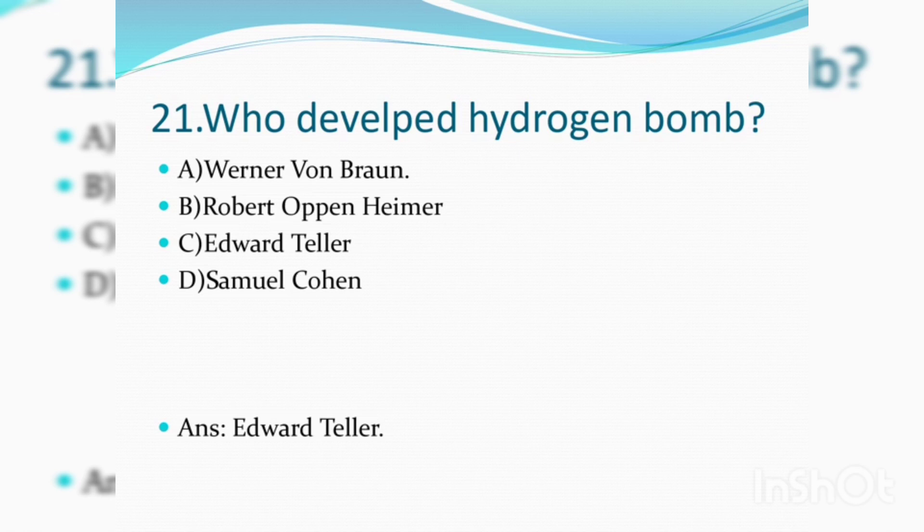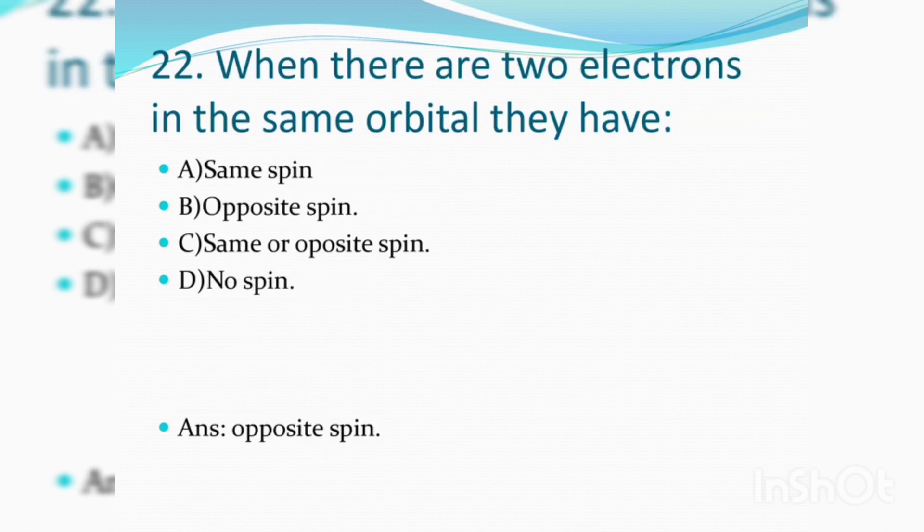Next question: Who developed a hydrogen bomb? Answer is Option C: Edward Teller. When there are two electrons in the same orbital, they have? Answer is Option B: Opposite Spin.